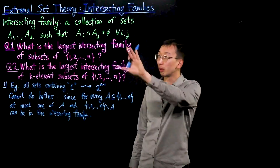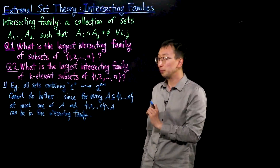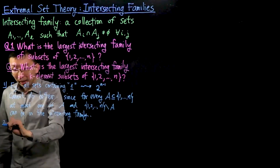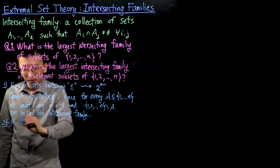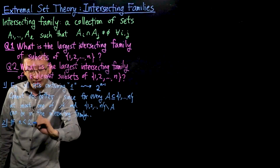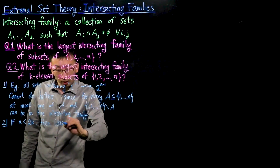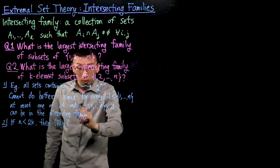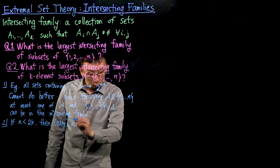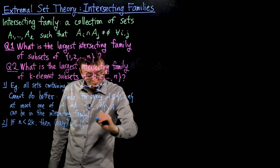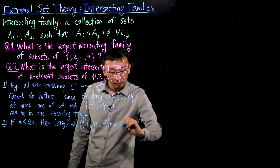This finishes question one. Now let's move on to the more interesting and harder question two. First, here is an easy case: if N is less than 2K, then by the pigeonhole principle, any pair of K-element subsets of {1, …, N} must intersect. So we can take all N-choose-K sets and they form an intersecting family.